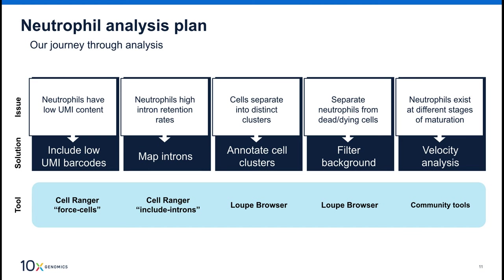Here's our plan. Across the top we have the issues that we're facing in this experiment. Below the issues we have our analysis solution, and under that we have the tool we're using. We have two goals for this experiment: the first is to show that we have captured neutrophils, and the second is to show that we have preserved the biological state of the neutrophils. Notably, neutrophils go through a maturation process in the peripheral blood, so if we have preserved the biological state, we should see neutrophils at multiple stages of maturation. To show this, we're going to use a community developed tool for identifying and visualizing cells along a developmental or maturation path.